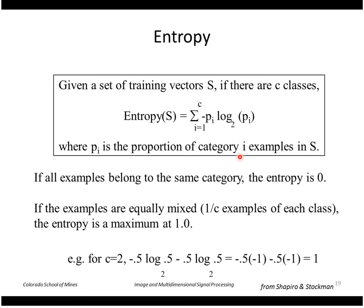So for example, if all of the examples belong to the same category—in other words one of the P's is one and all the other P's are zero—then the total entropy is zero.